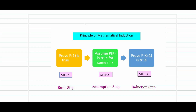The principle of mathematical induction states: prove p(1) is true in step 1, which is the basic step. Assume p(k) is true for n equal to k, which is the assumption step. In the induction step we prove that p(k+1) is true. In general, if the quantity is true for p(k+1), then the statement remains true for all values of n greater than or equal to 1, where n belongs to the set of natural numbers.